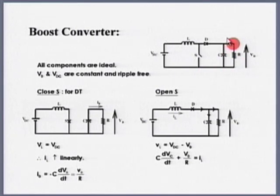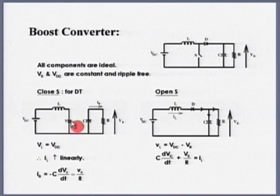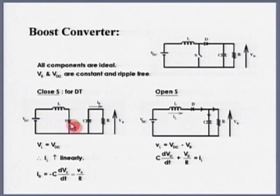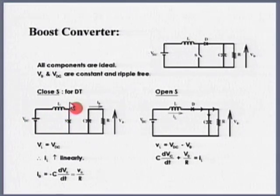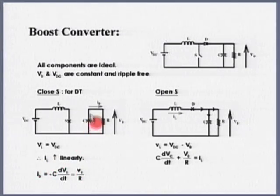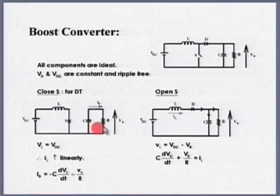Voltage applied to the inductor is constant because, since the switch is turned on and off at a very high frequency, in one switching cycle V_DC is expected to remain constant. Therefore in one switching cycle, voltage across the inductor will remain constant, so current increases linearly while capacitor supplies power to the load — capacitor will discharge.